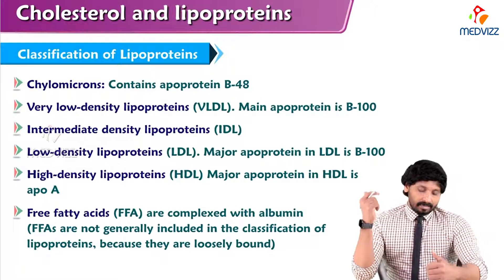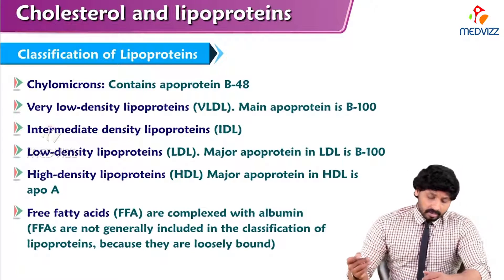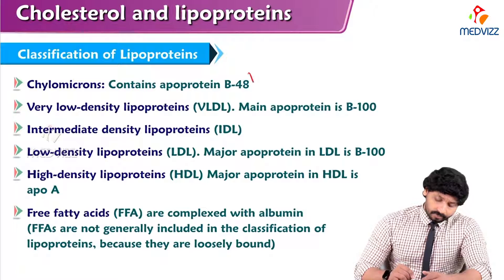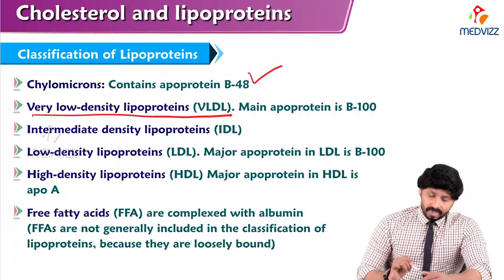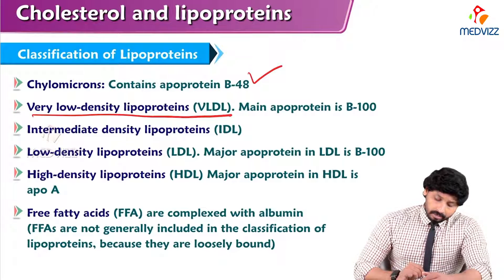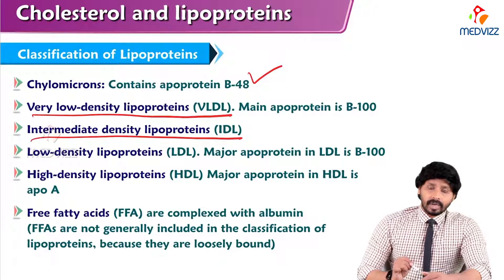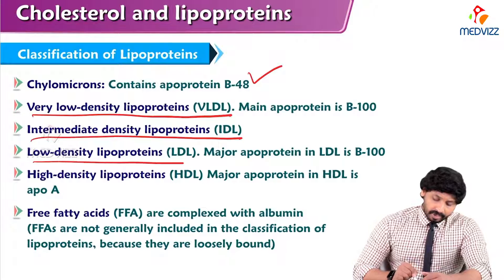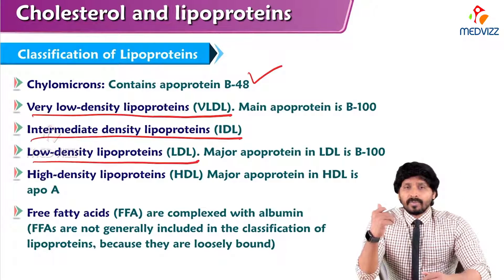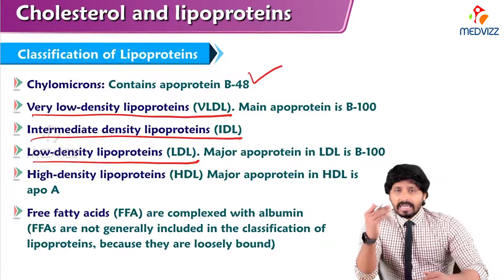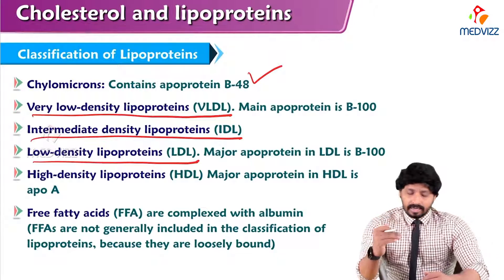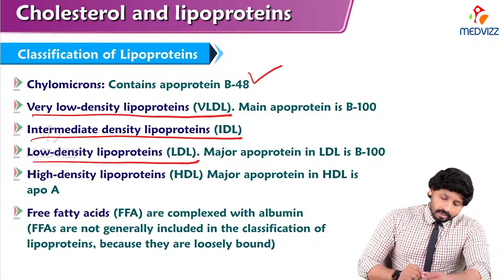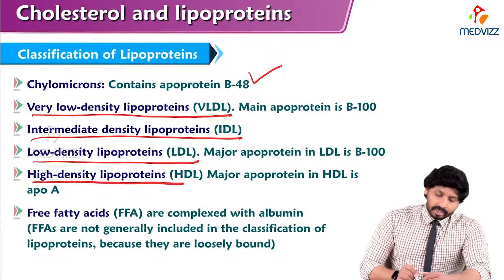There are 5 major types of lipoproteins. One is chylomicron, another is very low density lipoprotein (VLDL), the third is intermediate density lipoprotein (IDL), and low density lipoprotein (LDL). IDL is the intermediate form between VLDL and LDL — when VLDL is converting into LDL, that intermediate form is known as IDL. And the last one is high density lipoprotein (HDL).